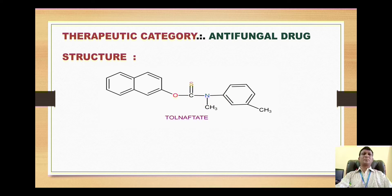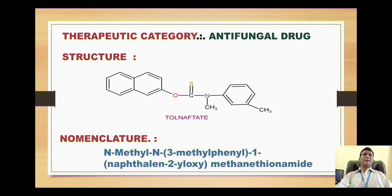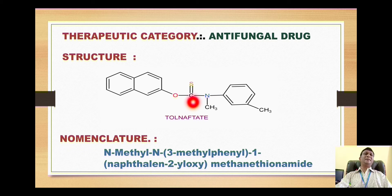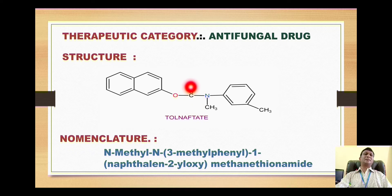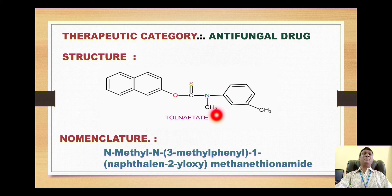As per the nomenclature, here is the basic nucleus which is called methane thionamide. This part has a C double bond with N, and here is a single carbon, so it is a derivative of methane. Here is a sulfur, so it is methane thio, and the carbon is attached with nitrogen, so it is called methane thionamide.